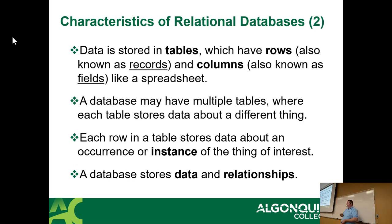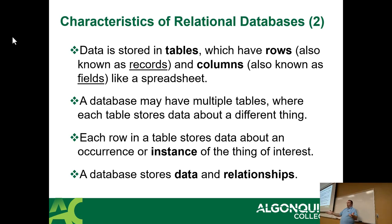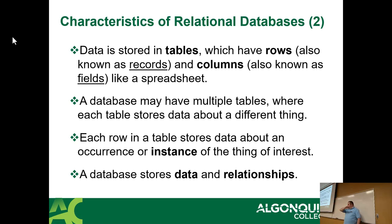In a relational database, data is stored in tables, which have rows — known as records — and columns, also known as fields. If you've used a spreadsheet like Excel or Google Sheets, you know what a table roughly looks like. Each row is a collection of columns; that's a database table in its purest concept. Data isn't actually stored exactly like that internally, but conceptually that's what you're thinking about: columns hold specific pieces of data, and a row is a collection of each column.